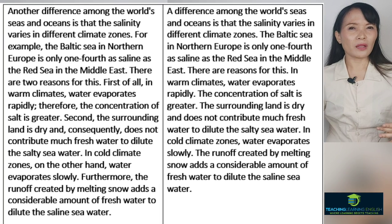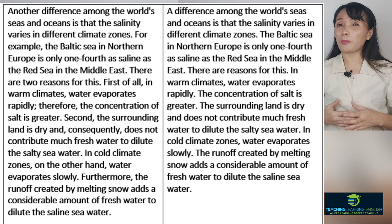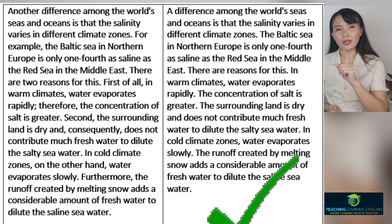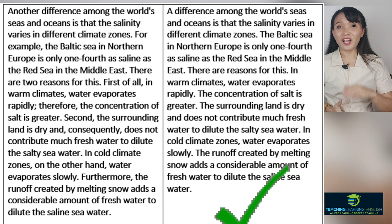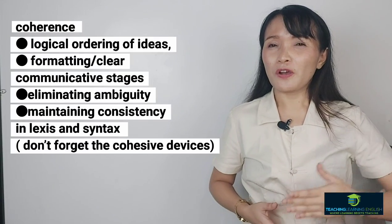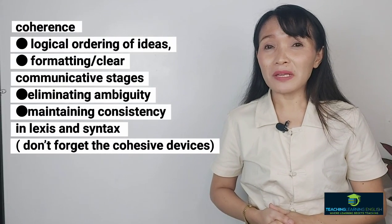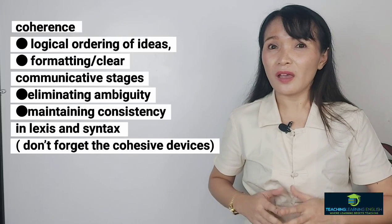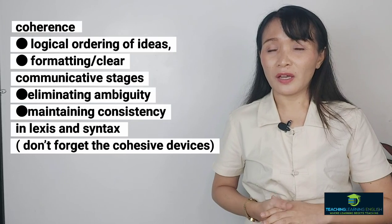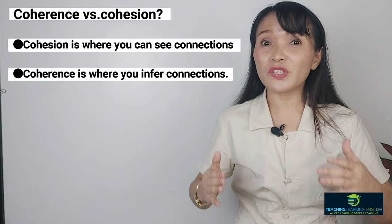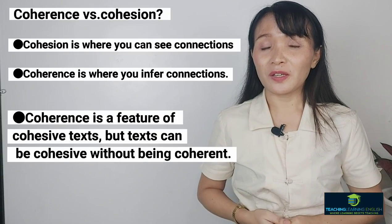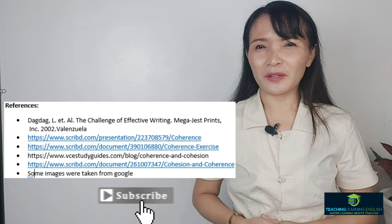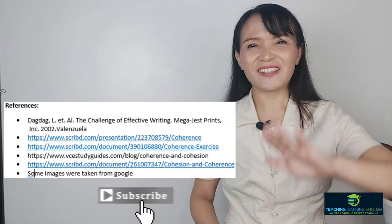Both paragraphs may have the same information, but paragraph two is easier to understand because it contains transition signals — each signal has a meaning and the flow of thought is logical. To summarize, coherence can be achieved through logical ordering of ideas, formatting, clear communicative stages, eliminating ambiguity, maintaining consistency in lexis and syntax, and using cohesive devices. Cohesion is where you can see connections, while coherence is where you infer connections. Coherence is a feature of cohesive texts, but texts can be cohesive without being coherent. Happy learning, everyone!